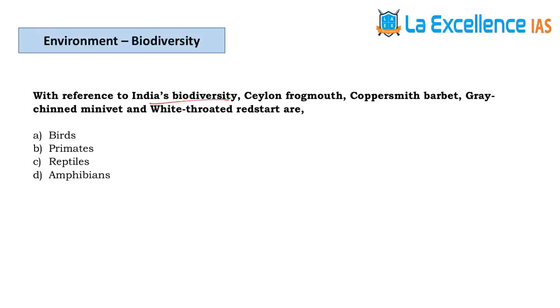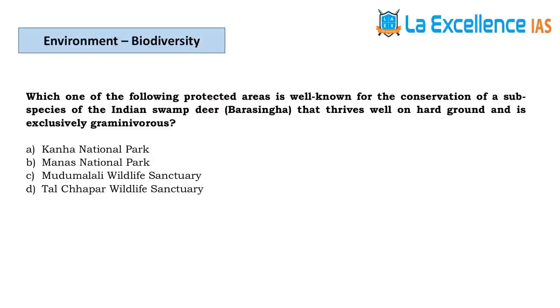The next question is about India's biodiversity. Salon coppersmith — you may have heard of salon; it's a very nice beautiful bird. When you know salon is a bird, you will automatically arrive at answer A.